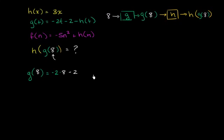Minus h of 8. Notice, to evaluate g of 8, all we did is everywhere we saw a t, we replaced it with the input 8. Now let's see if we can calculate this. This is going to be equal to negative 2 times 8 is negative 16, minus 2 is negative 18. So this is going to be equals negative 18 minus, what is h of 8 going to be equal to?